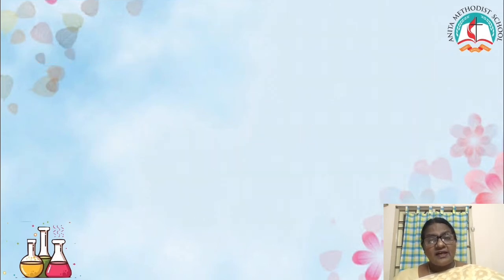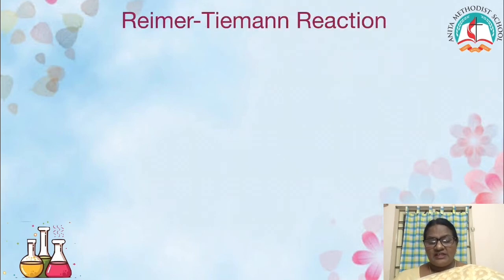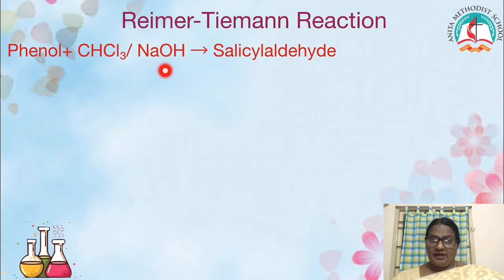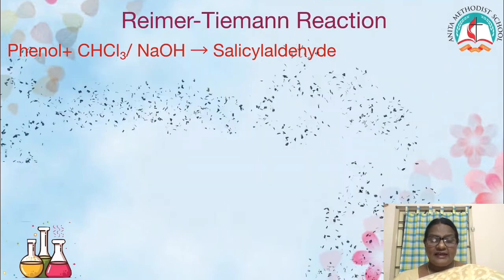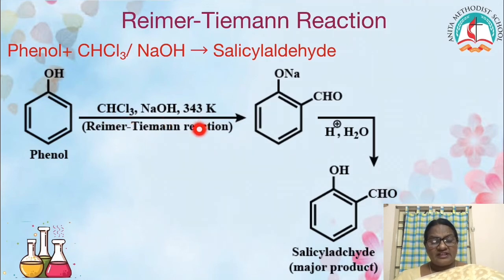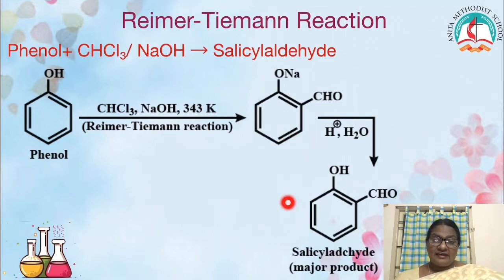Next, we are going to see the Reimer-Tiemann reaction. Phenol reacts with chloroform (CHCl3) in the presence of sodium hydroxide at 343 Kelvin to give salicylaldehyde. Instead of a carboxylic acid group, we get an aldehyde group. This gives an intermediate addition compound, which on further hydrolysis gives salicylaldehyde as the major product.